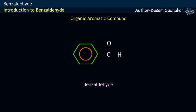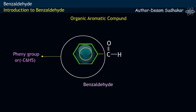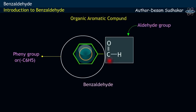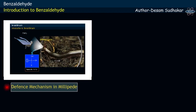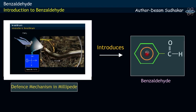Benzaldehyde is an organic aromatic compound having an aromatic phenyl or C6H5 group and an aldehyde CHO group. Thus, the topic on the defense mechanism of millipedes introduces us to study about benzaldehyde, the details of which would be discussed in the coming topics.